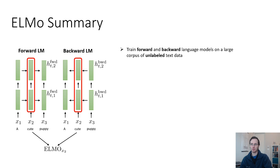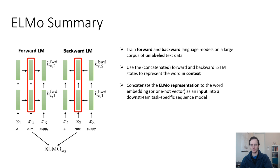All right. So, a summary of ELMO. You train a forward language model and a backward language model on a large corpus of unlabeled text data. The larger, the better. And the forward and backward model are trained independently of one another. You use the concatenated forward and backward LSTM states to represent the word in the context of the other words in that sentence. And then you concatenate the ELMO representation to the word embedding or one hot vector as an input into a downstream task-specific sequence model. And this provides a context-specific and semantically meaningful representation of each token.